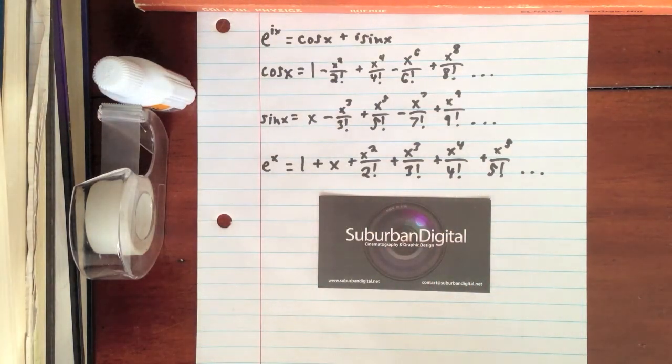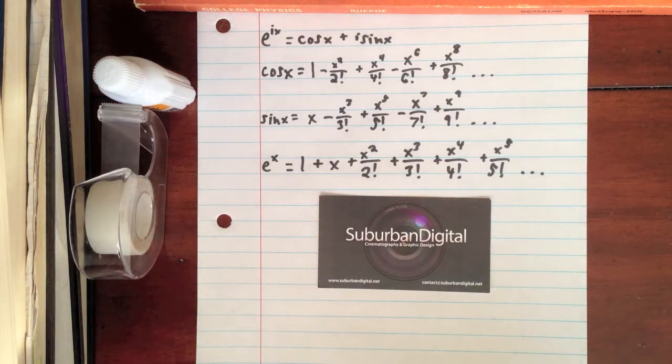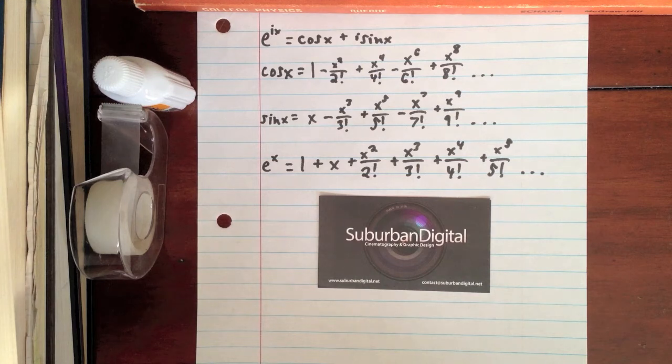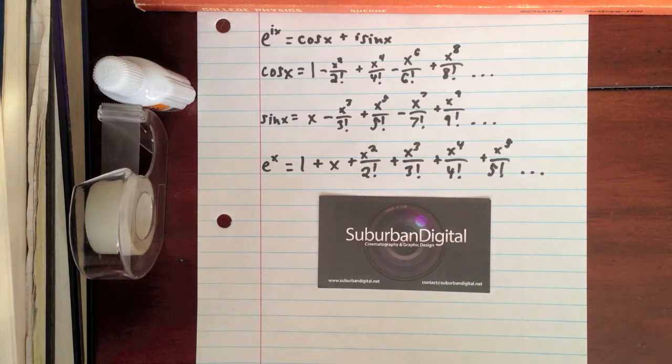Note that the denominators with the exclamation marks simply denote the factorial of the given number, meaning that the number is multiplied by every positive integer less than that number. Also note that the first term in each polynomial approximation is raised to the zero power, and therefore is equal to one.